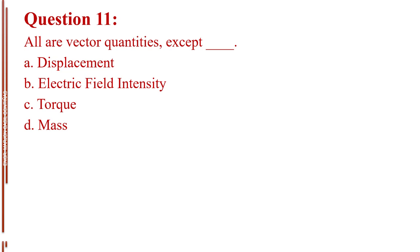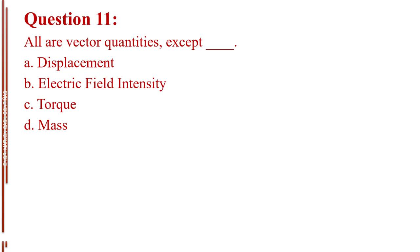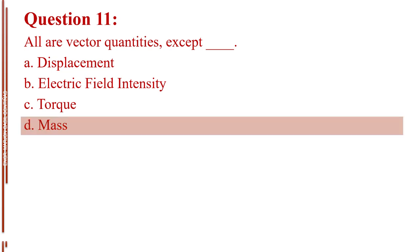Question number 11. All are vector quantities, except blank. Letter A, displacement. Letter B, electric field intensity. Letter C, torque. Letter D, mass. The answer is Letter D, mass.